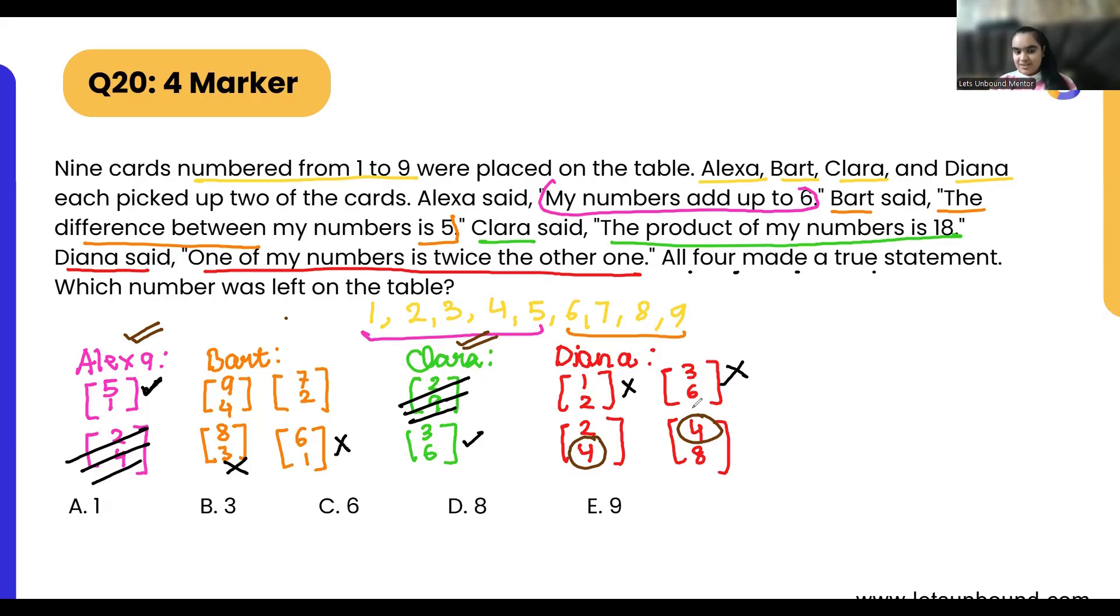So that means let's assume Bart is not having four, then only we can give Diana number four. So let's assume now Bart is having number seven and two. That eliminates this option because here is number two which we already gave to Bart.